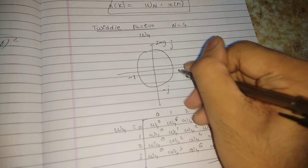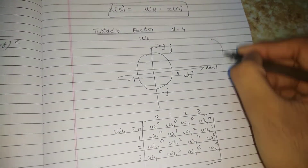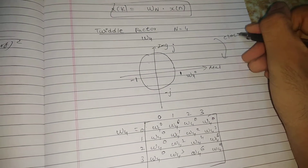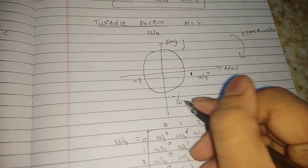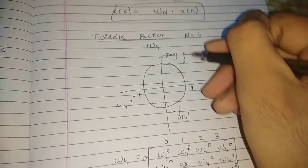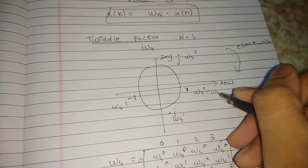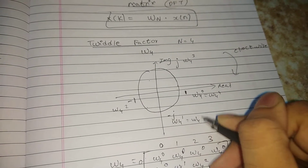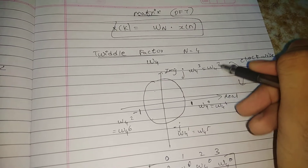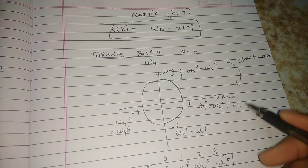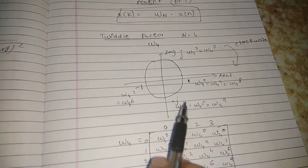Now, going back to the unit circle, starting at W4^0 and moving in the clockwise direction: W4^0, W4^1, W4^2, W4^3, W4^4, W4^5, W4^6, W4^7 are marked around the circle.